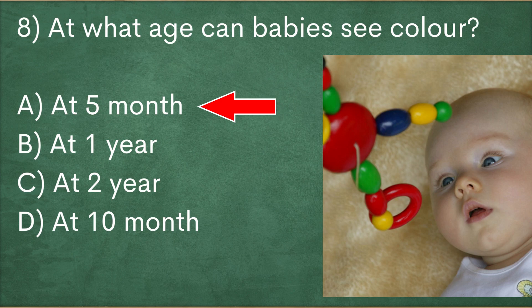Newborns only see black and white. Babies have the ability to see full color by 5 months.